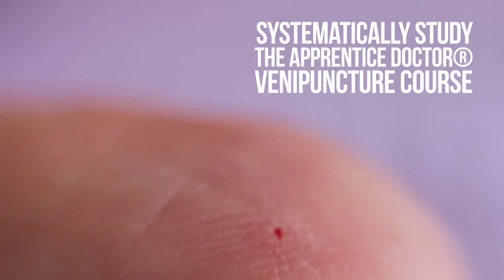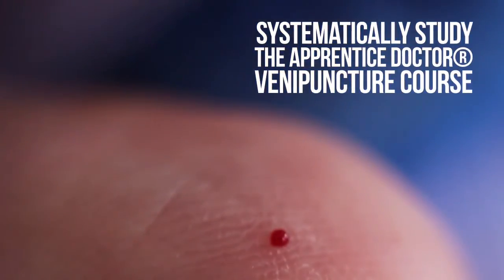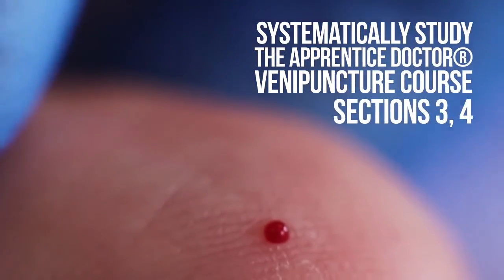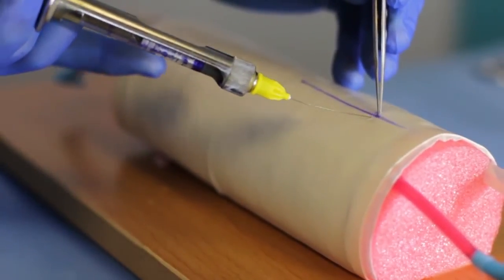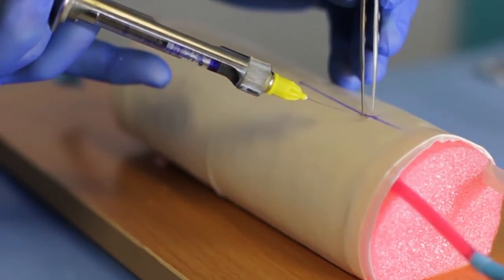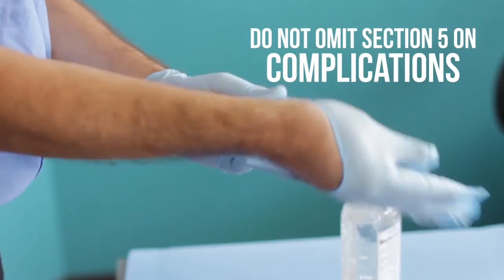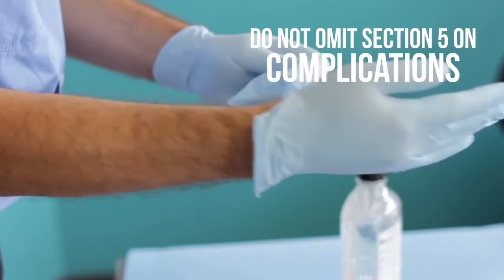Systematically study the Apprentice Doctor Venipuncture course sections 3, 4, and 5 in order and perform all of the practical projects using your Venipuncture trainer. Where applicable, do not omit Section 5 on complications.